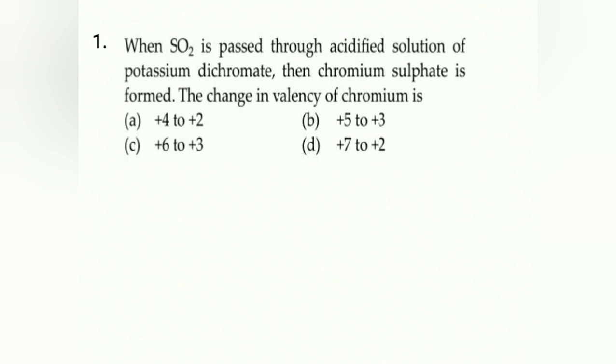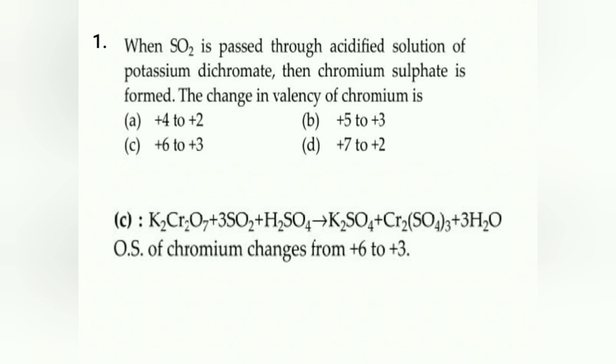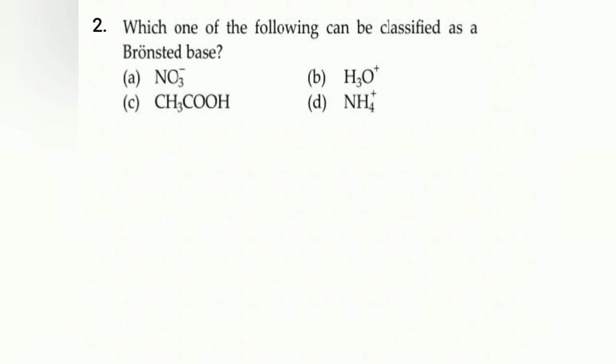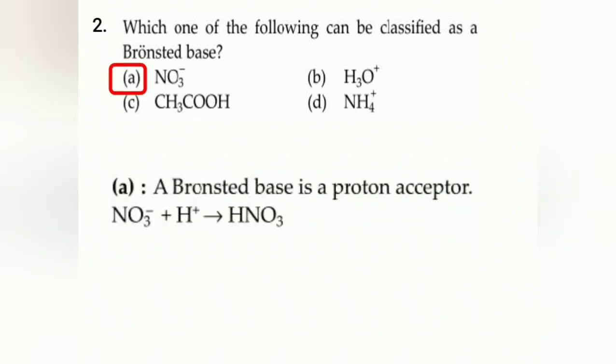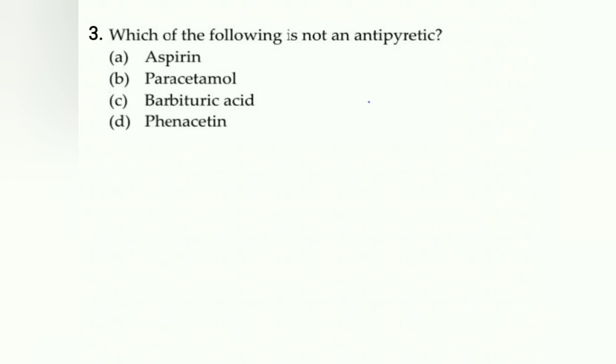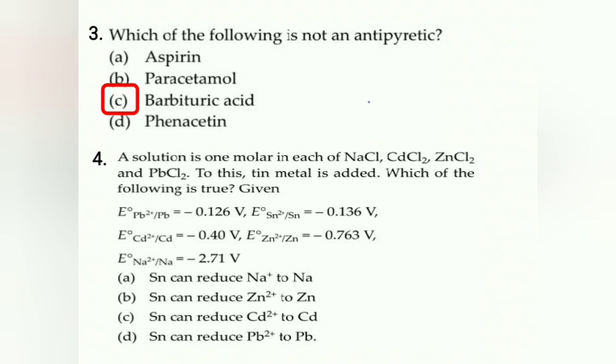First question: when SO2 is passed through acidified potassium dichromate solution, dichromium sulfate is formed. The change in oxidation state of chromium is plus 6 to plus 3, so answer is C. Second: which can be classified as a Brønsted base? A Brønsted base accepts protons - only NO3- can accept a proton to form HNO3, so answer is A. Third: which is not an antipyretic? Barbituric acid derivatives are used in mental diseases, so answer is C. Fourth: a solution is one molar in each of NaCl, CdCl2, ZnCl2, and PbCl2. When tin metal is added, we can use common sense - only lead has less negative value than tin, so tin can reduce Pb2+ to Pb. Answer is D.